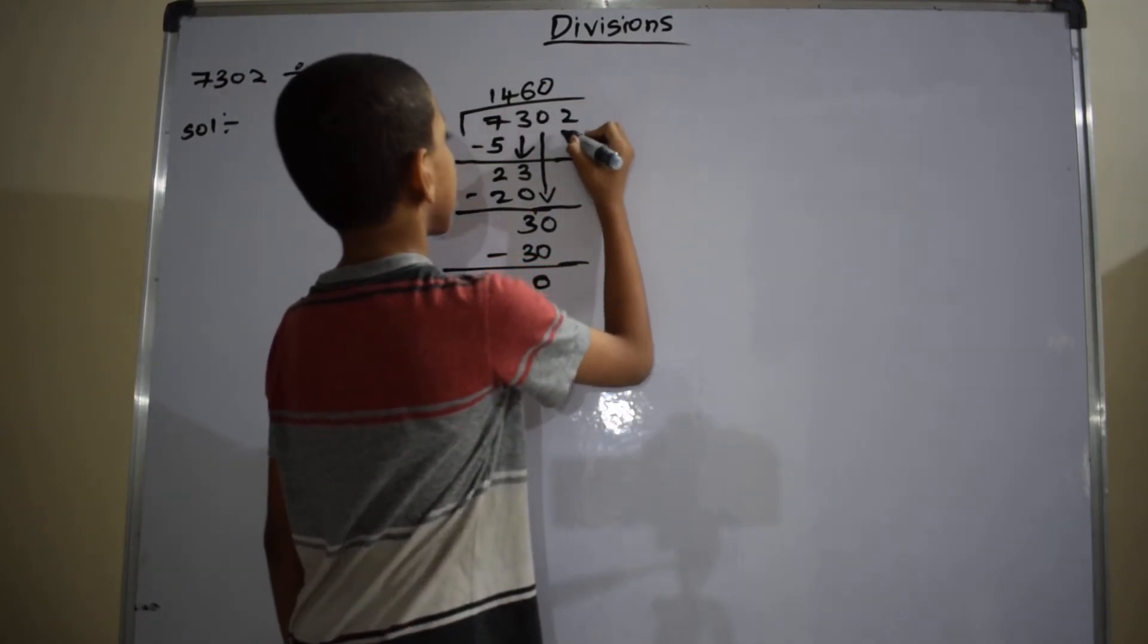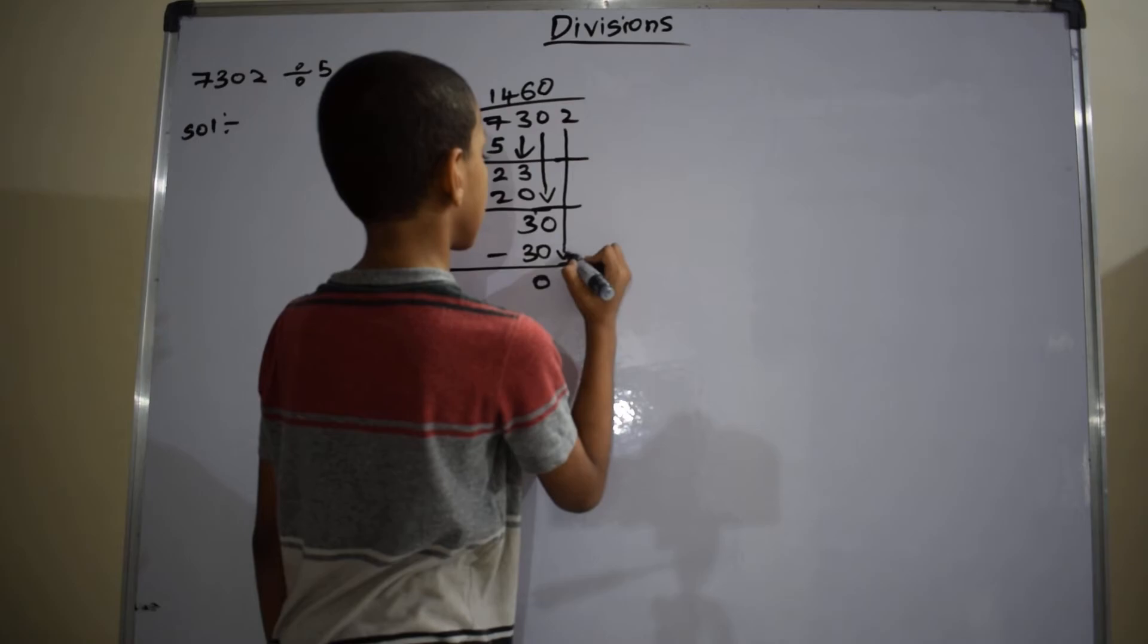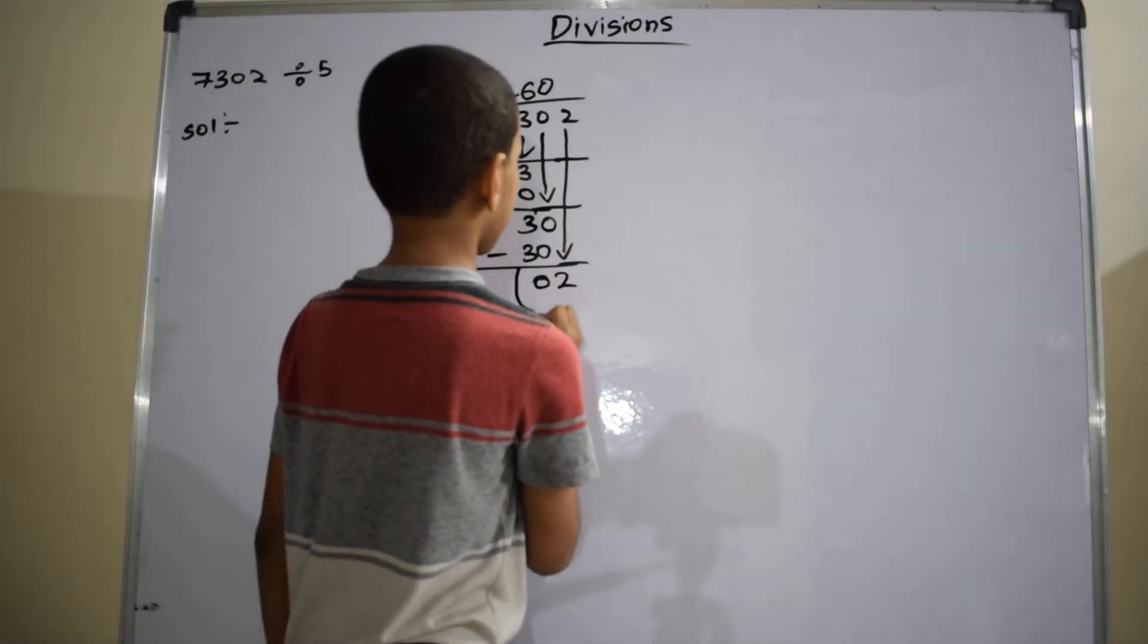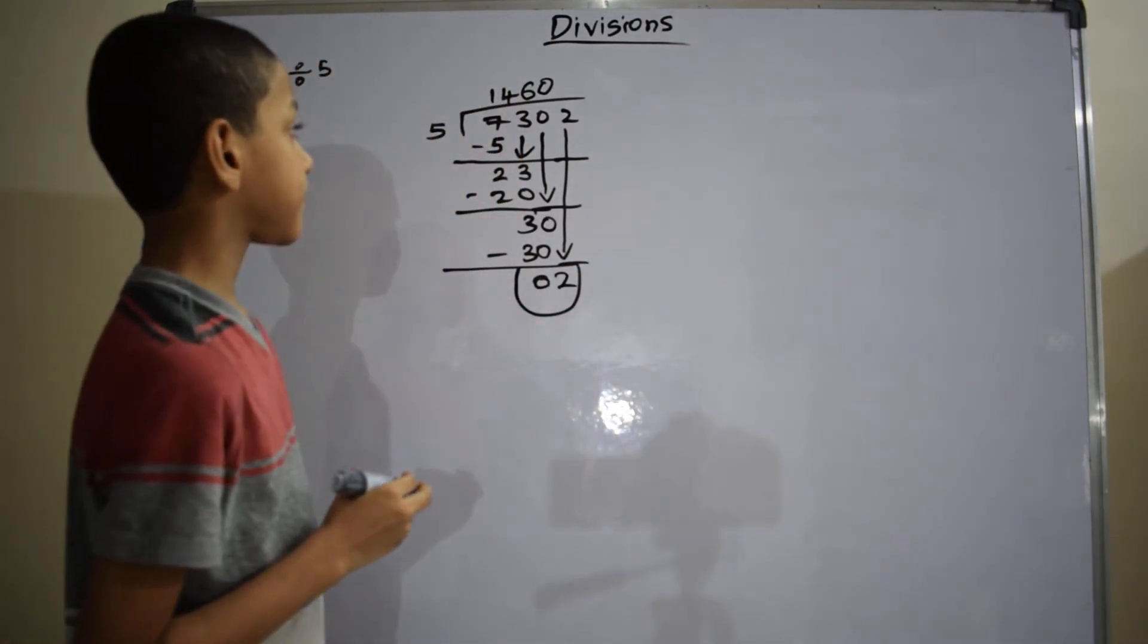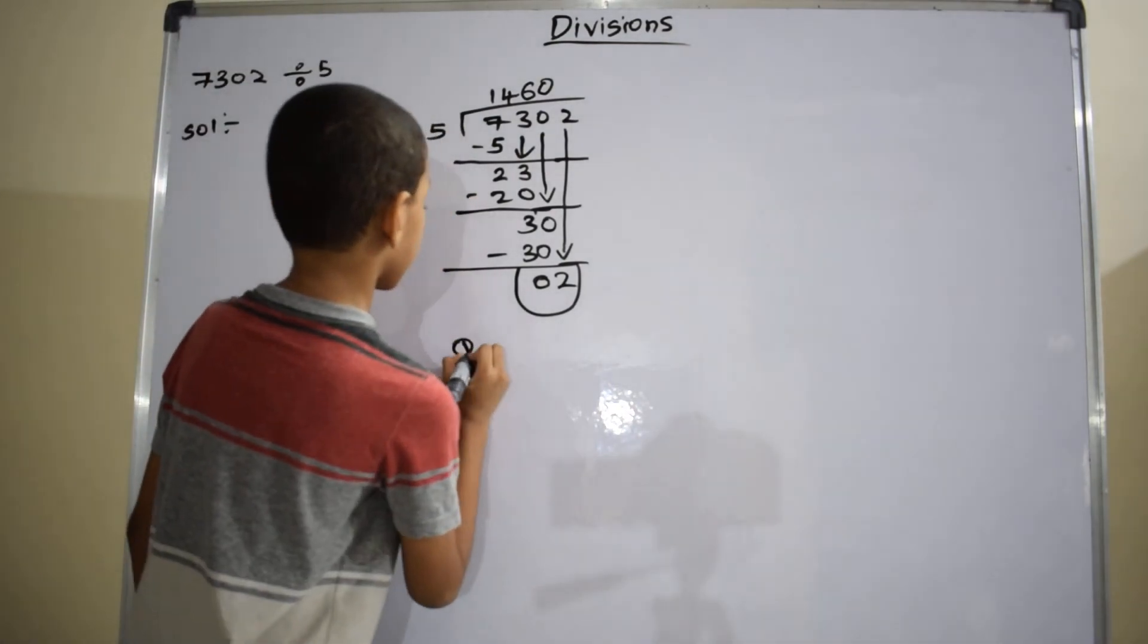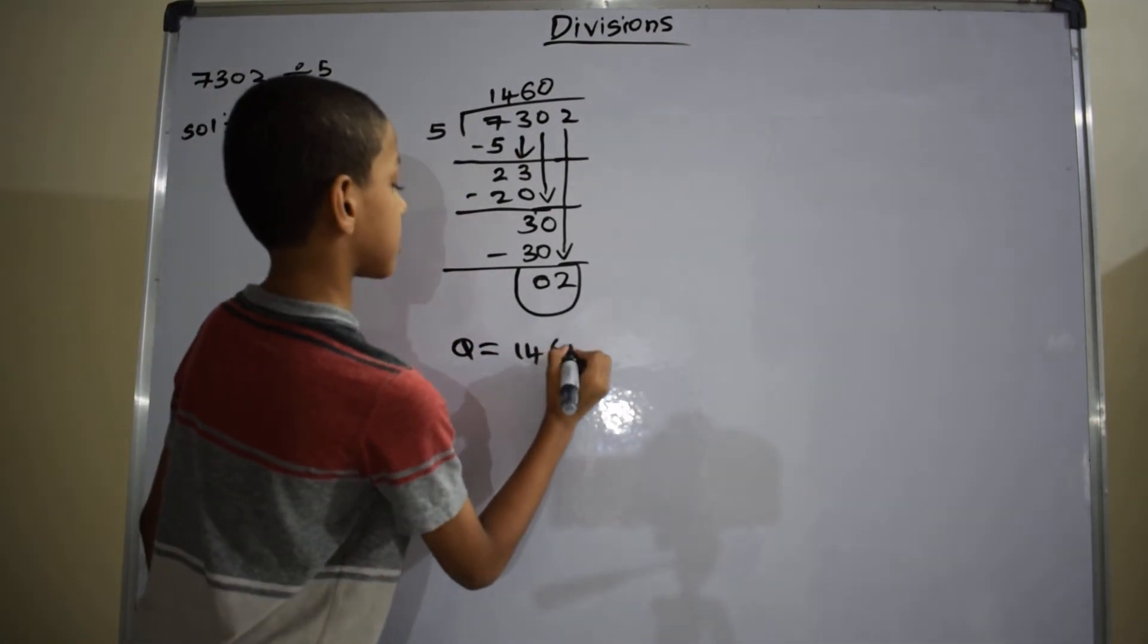Put 0 here and bring down this 2. It is not evenly divisible. So the remainder is 2. Our quotient equals 1460.